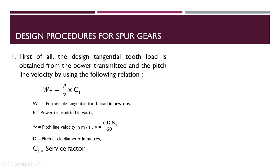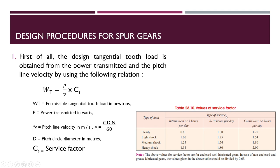The service factor Cs can be taken from a table based on the type of load and type of service. The type of load includes steady, light shock, medium shock, heavy shock, etc. The type of service includes intermittent or 3 hours per day, 8 to 10 hours per day, and continuous 24 hours per day. Usually we design for 8 hours per day with steady load, so the service factor is mostly 1. If the gear is not enclosed and not well lubricated, the service factor from the table should be divided by 0.65.